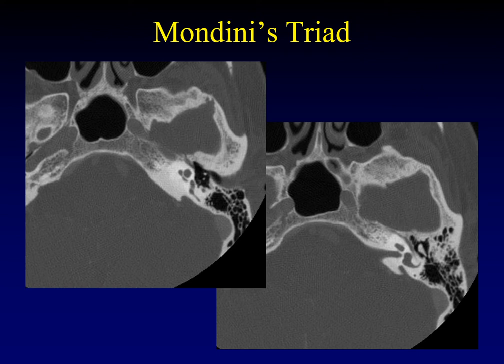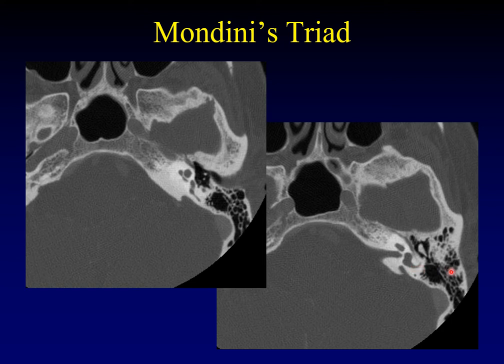Incomplete partition is one of the three elements of Mondini's triad, or Mondini's malformation. In addition to incomplete partition of the upper turns of the cochlea, there is also enlargement of the vestibular aqueduct, and dysplasia of the vestibule — usually enlarged laterally at the expense of the central island and lateral semicircular canal. You can see in this case how the posterior limb of the lateral semicircular canal has been widened. This is Mondini's triad, towards the more developed end of the spectrum.